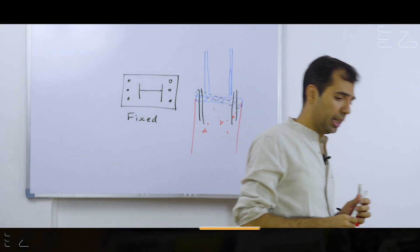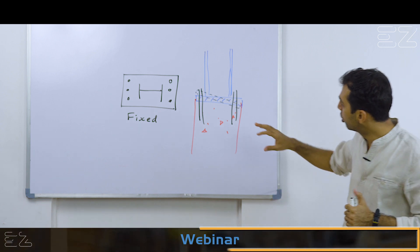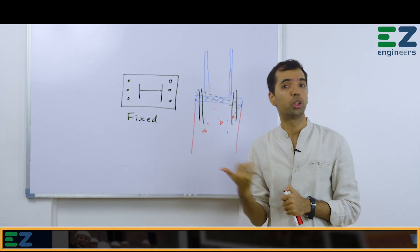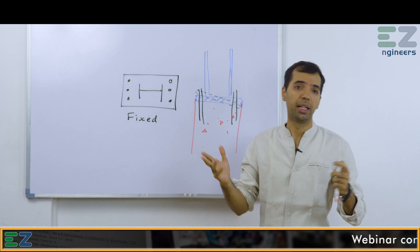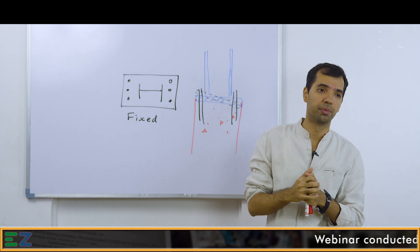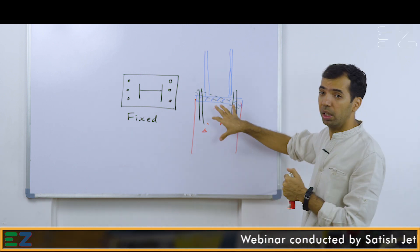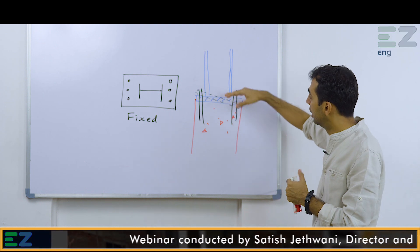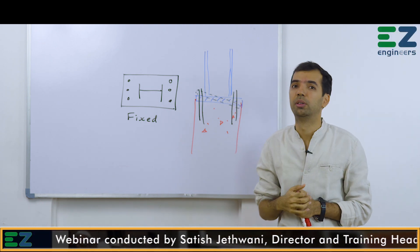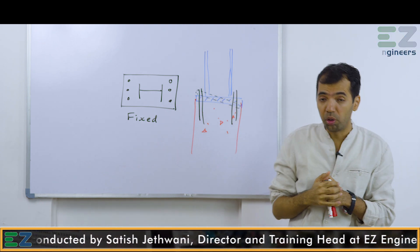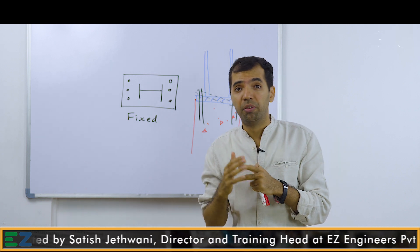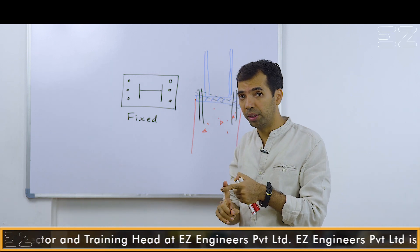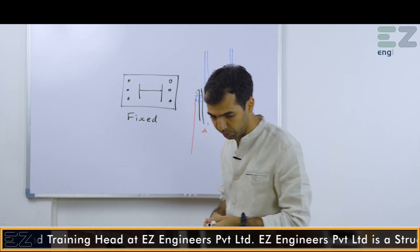Now, can anybody tell me — if I want to make this column pinned, what should I do? If I remove the anchor bolts, this column will fall down, and of course we don't want that. We want to make this column pinned, so what can we do?